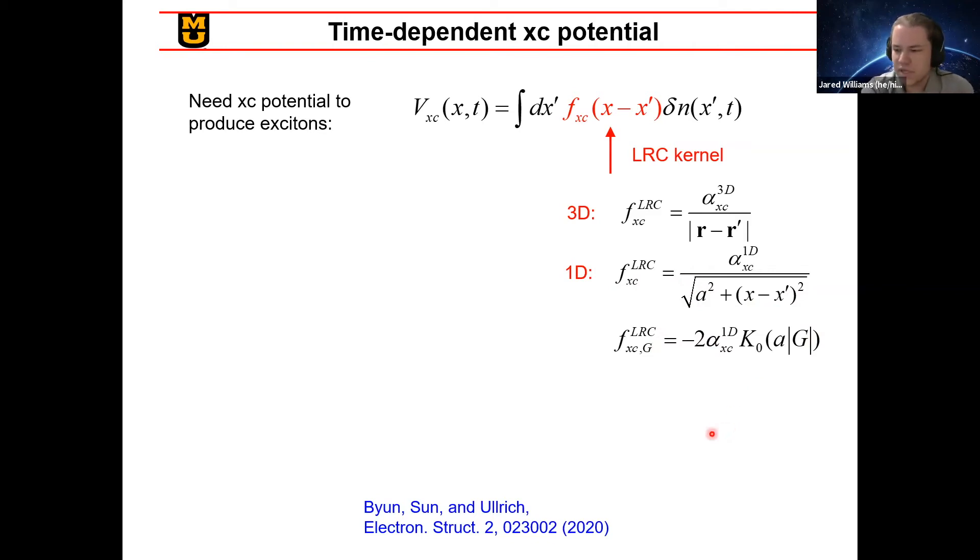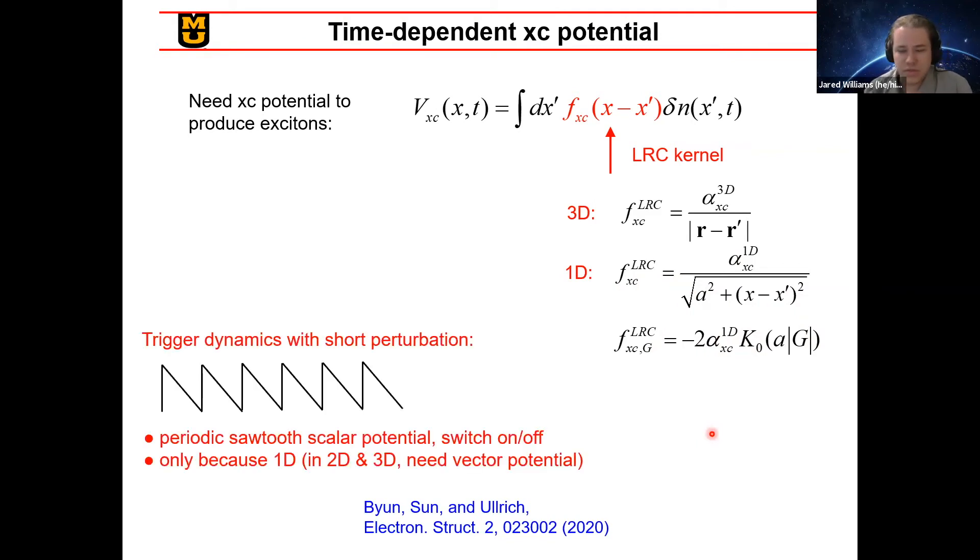And since we're doing our calculations in reciprocal space, we do a Fourier transform and get something like this that depends on these modified Bessel functions. And then the last piece of the puzzle before we can really see what we're getting here is something to start the system moving. And one way to do that and the most simple is this periodic sawtooth scalar potential that we switch on and then quickly switch off that essentially introduces a bias across the unit cell to offset the electrons that start oscillating and moving. And we can get away with this in 1D, but in 2 or 3D we would need a vector potential.